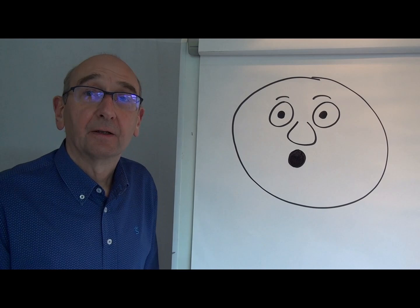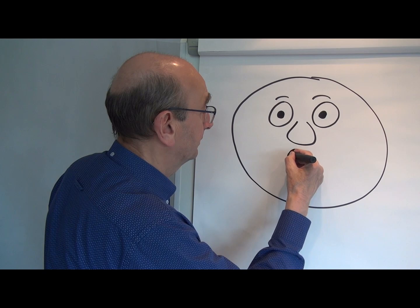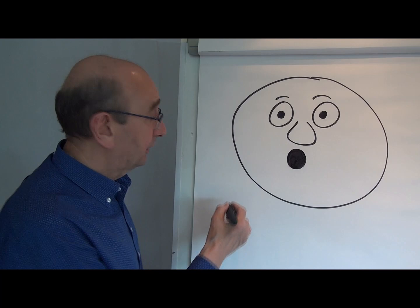But then what we need to be able to do is to colour in the circle, shade it in. There we are. So somebody shocked, and you can make this even bigger if you like if you want them to look even more shocked. Even more shocked. Mouth wide open.